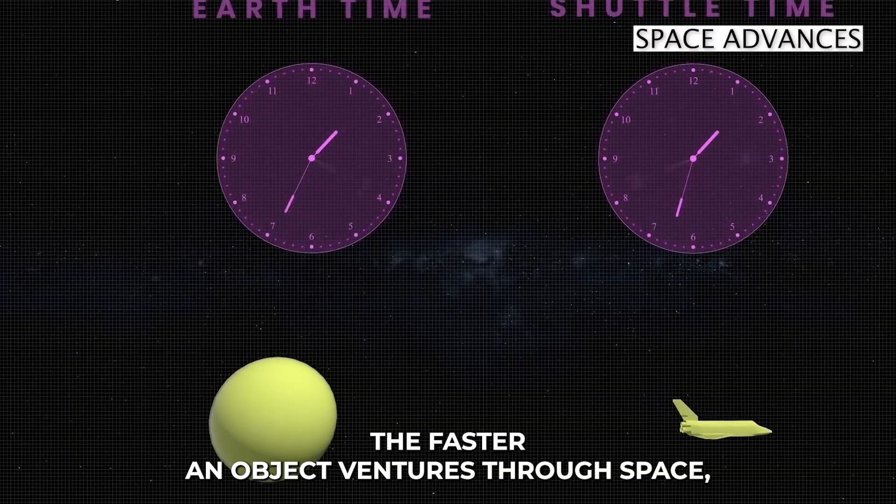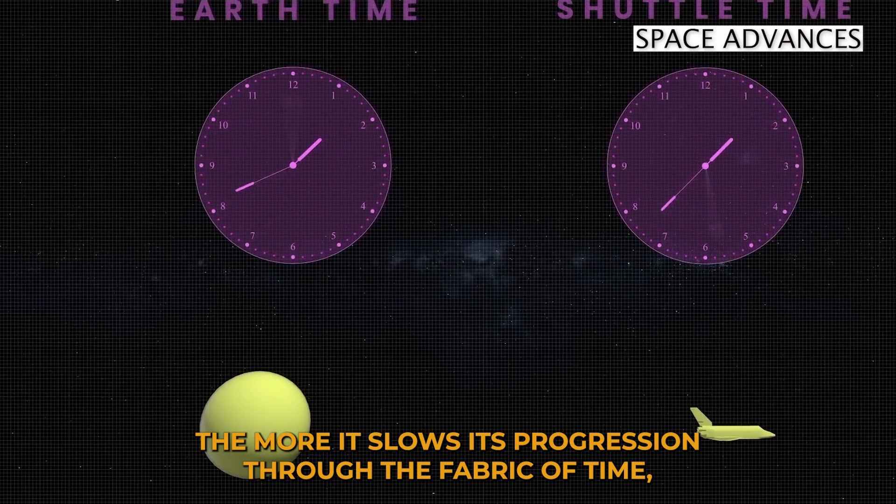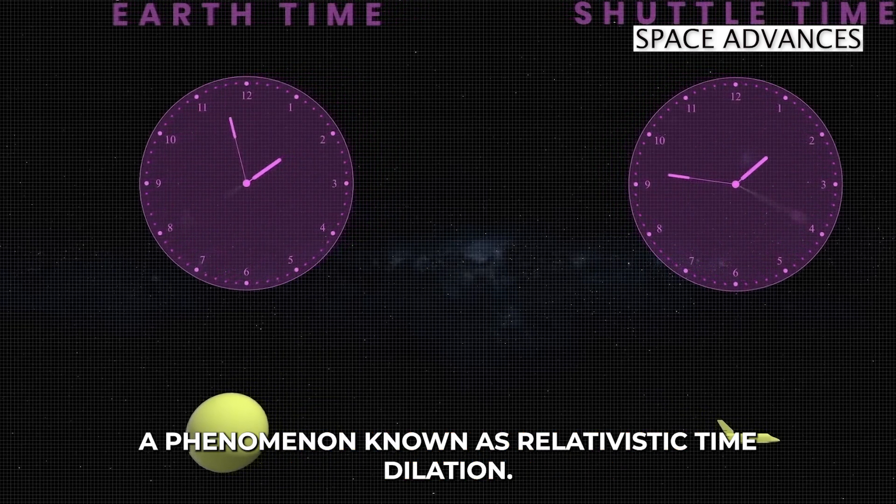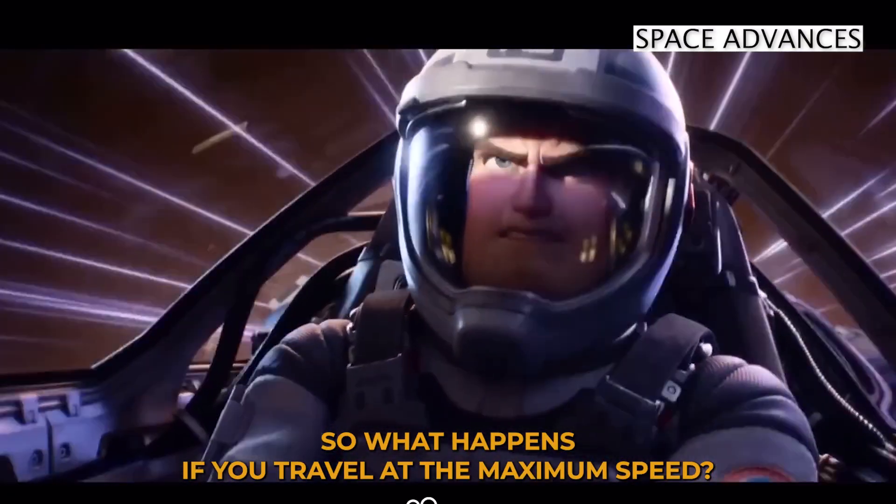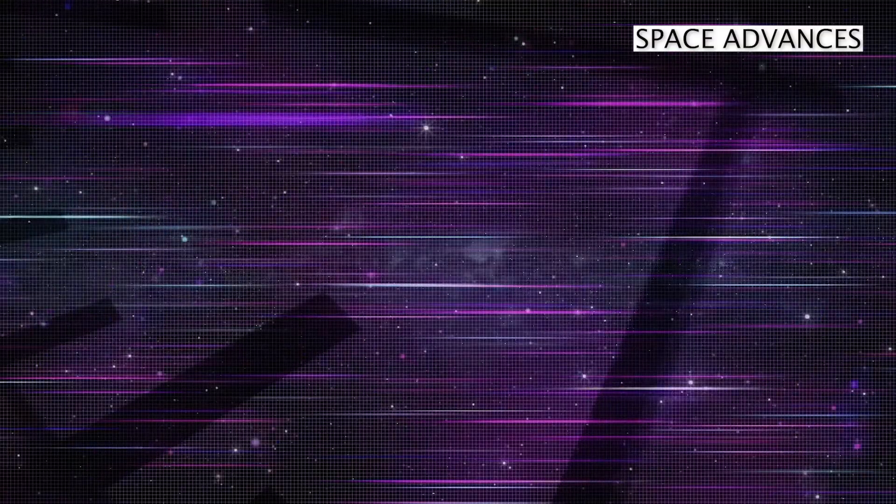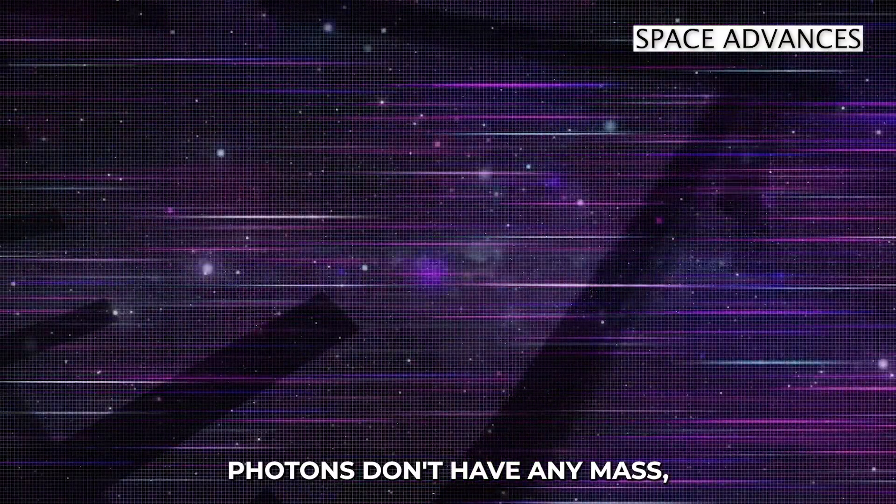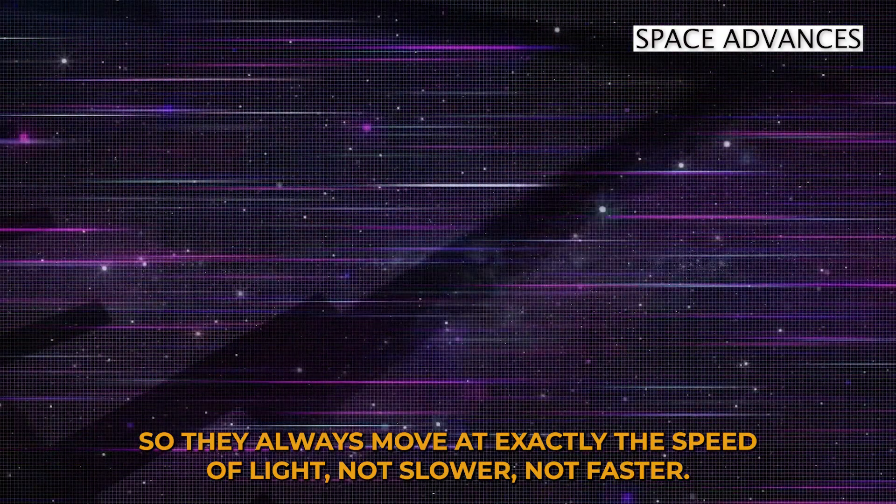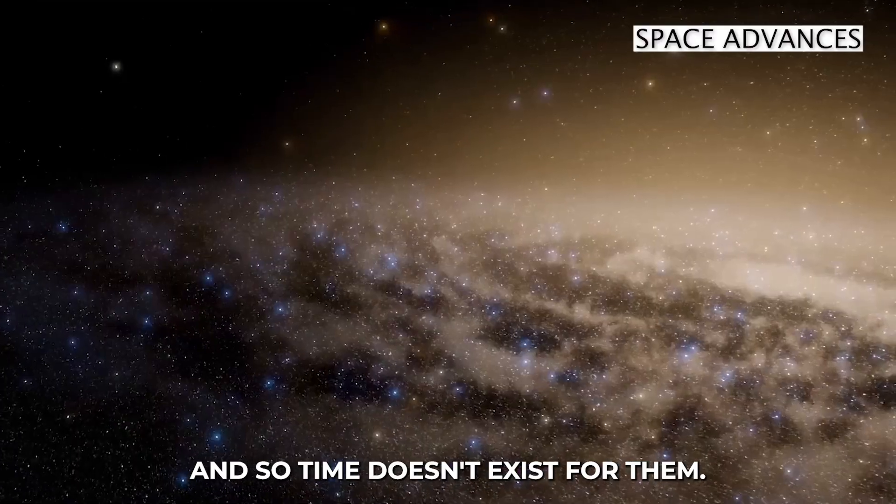The faster an object ventures through space, the more it slows its progression through the fabric of time, a phenomenon known as relativistic time dilation. So what happens if you travel at the maximum speed? Photons don't have any mass, so they always move at exactly the speed of light, not slower, not faster. And so time doesn't exist for them.